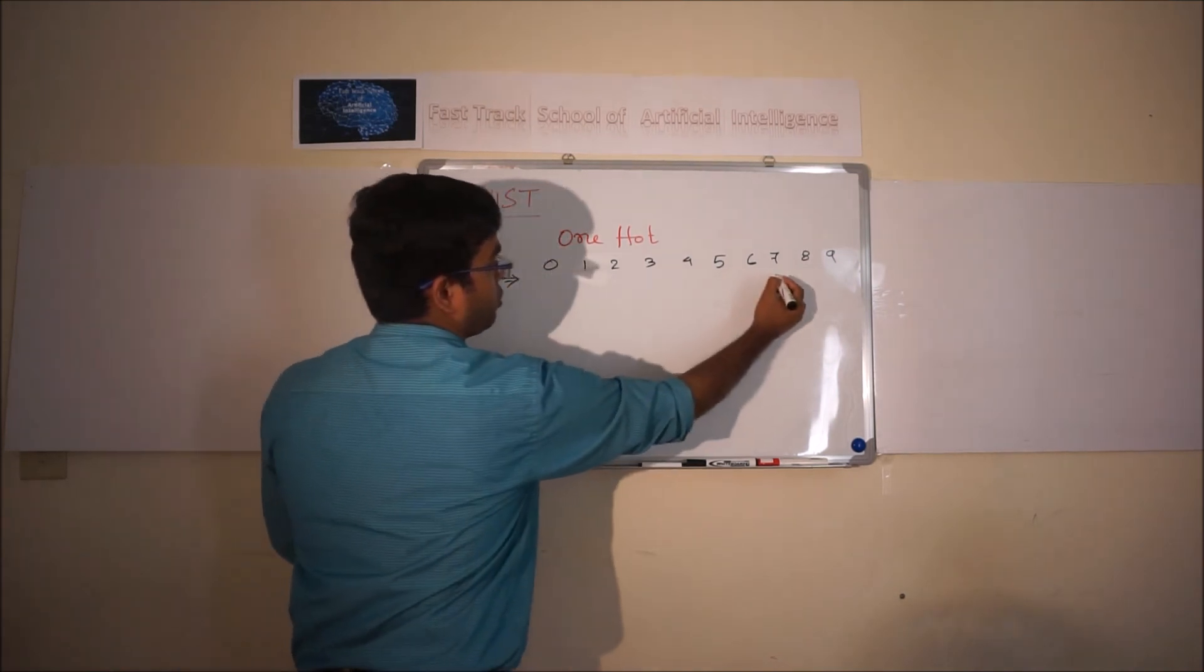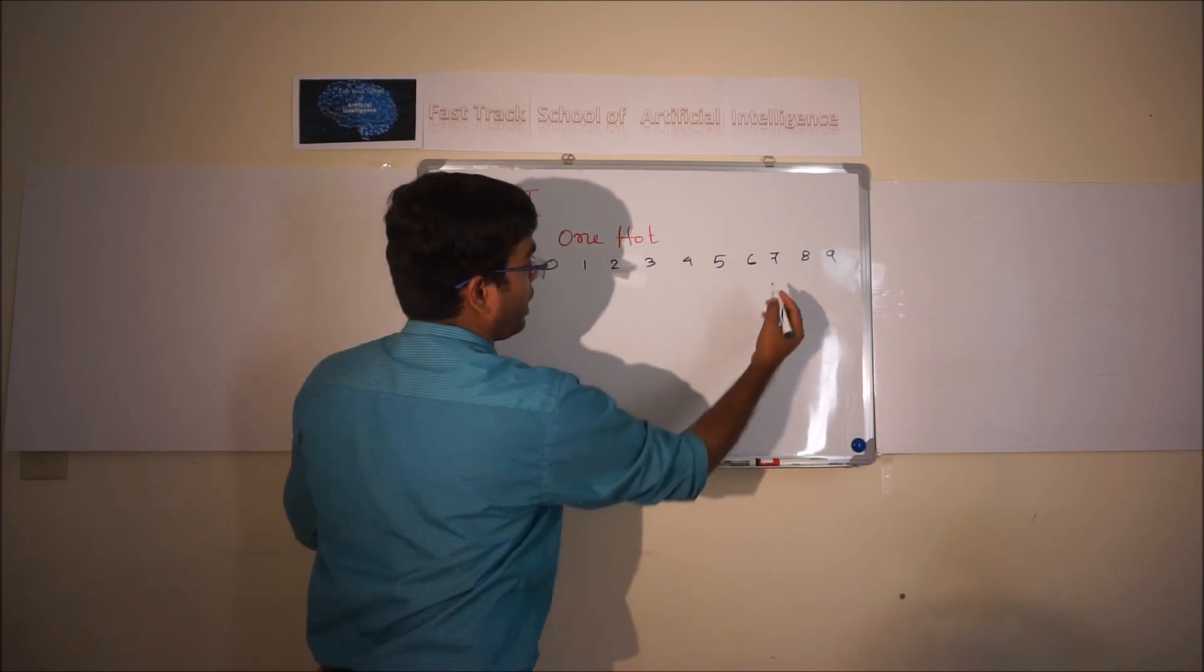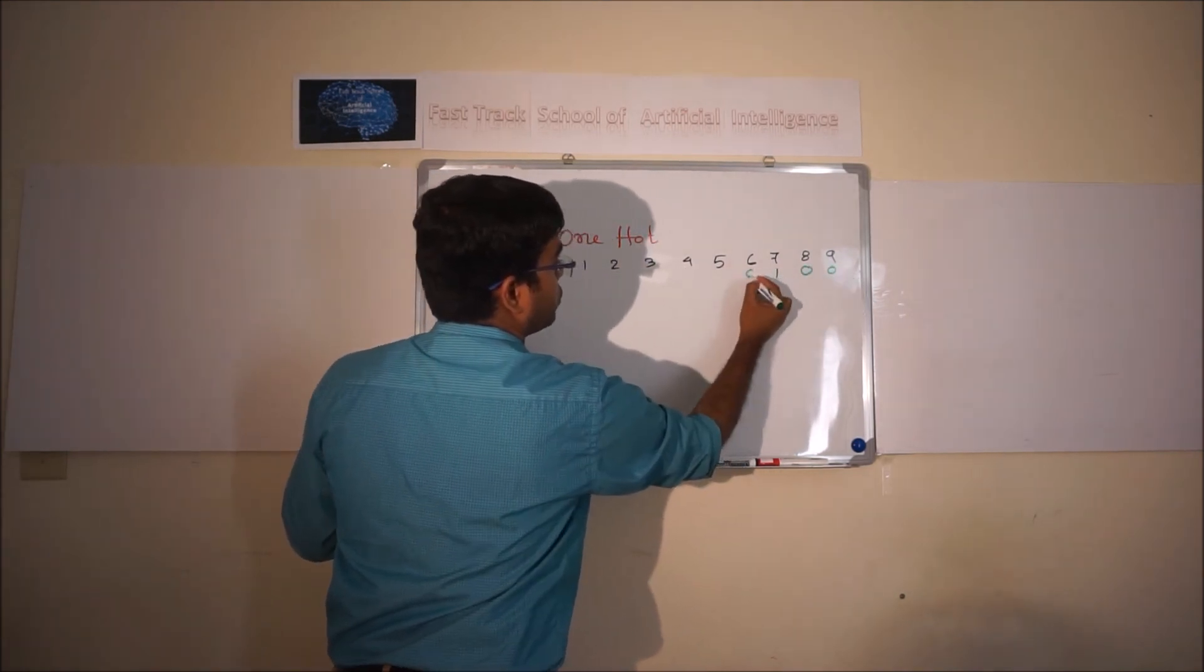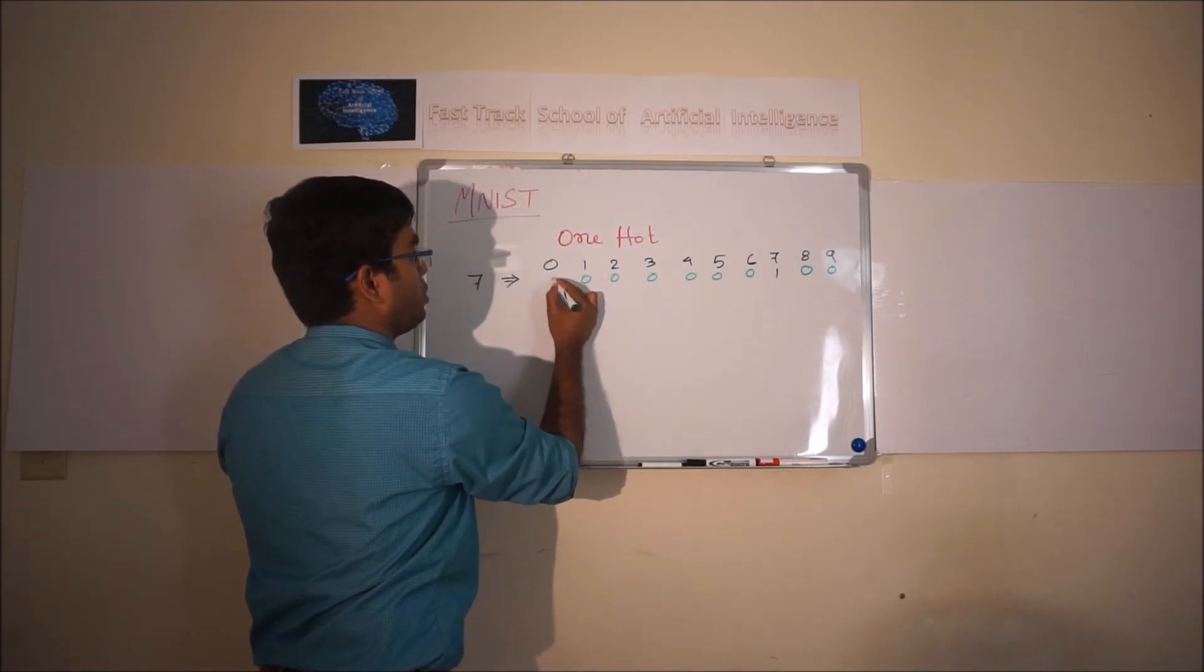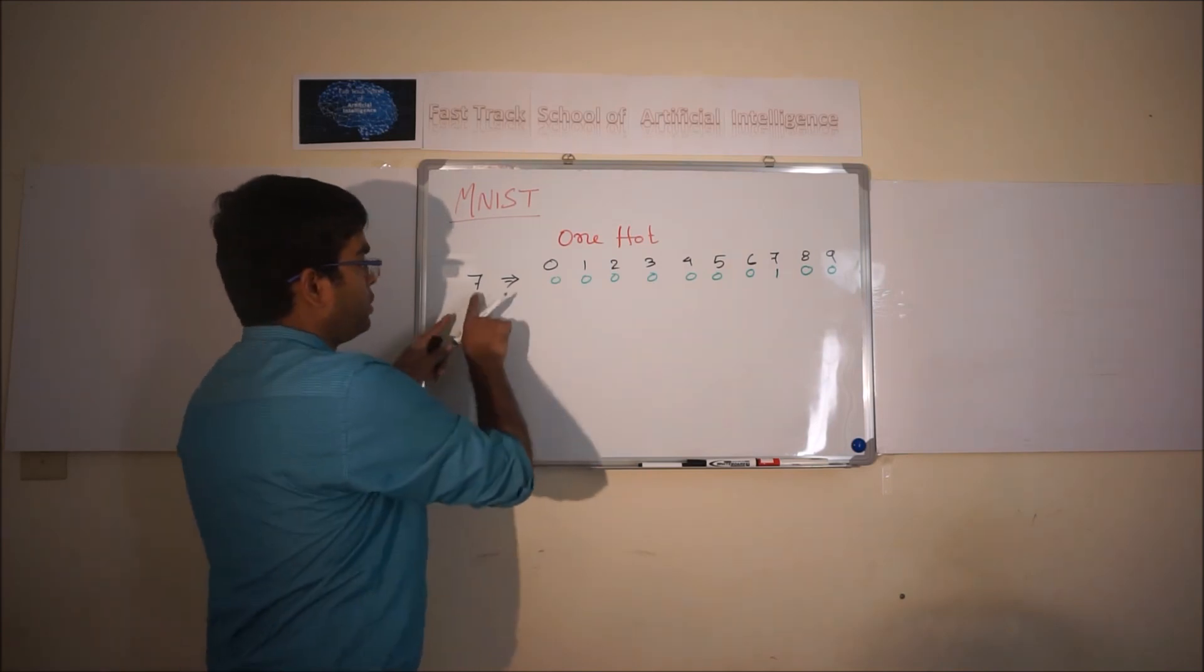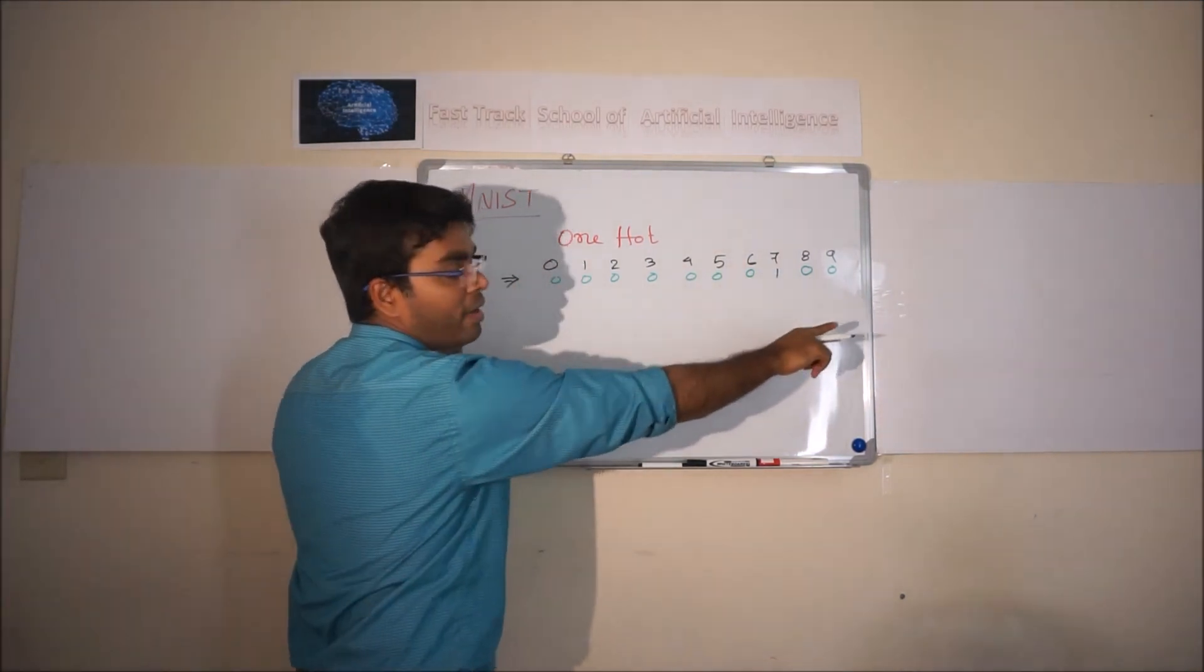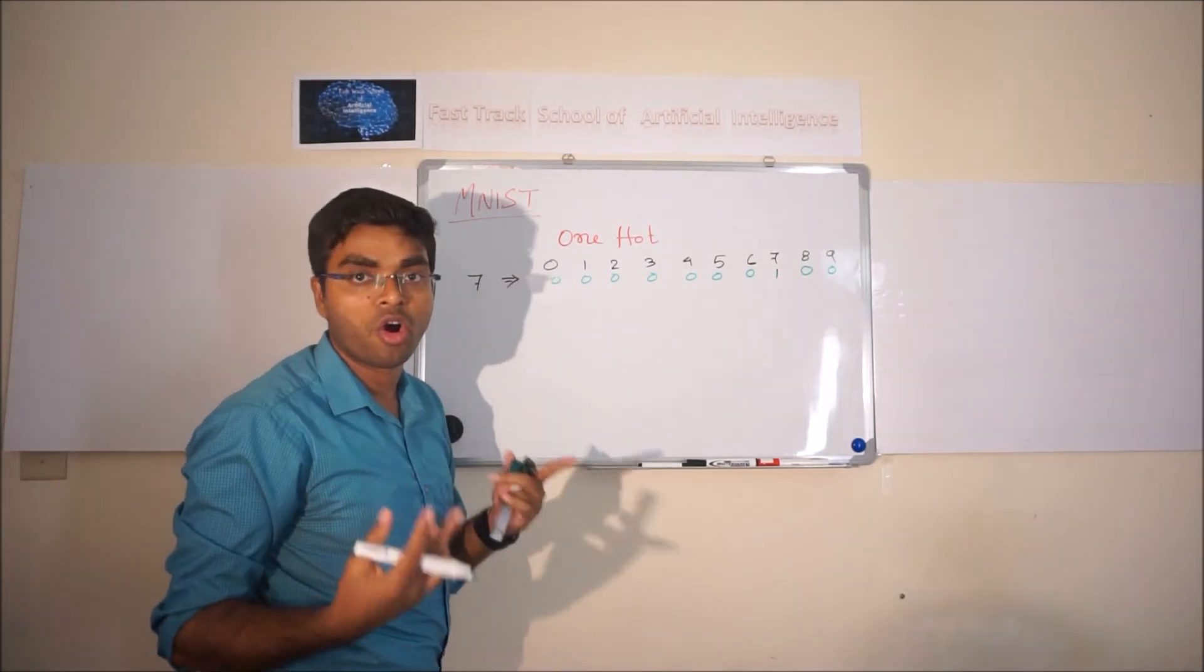And rest of the other columns will contain 0. This particular conversion is known as one hot mode.